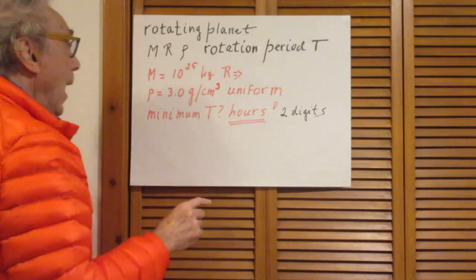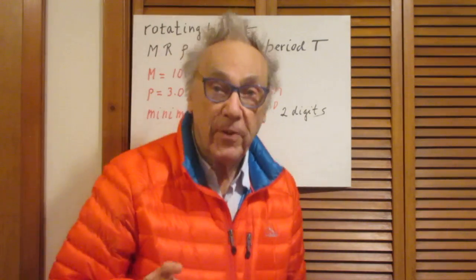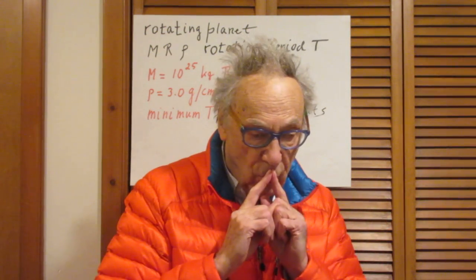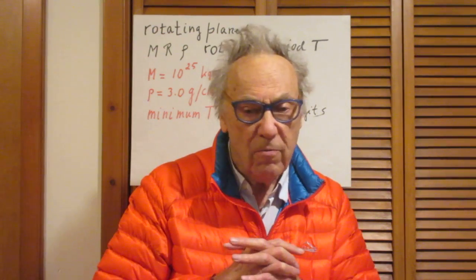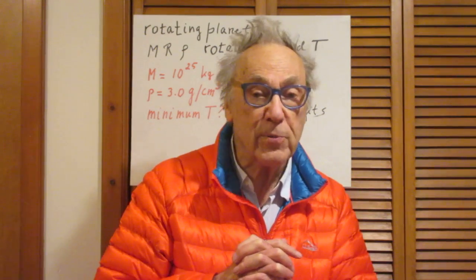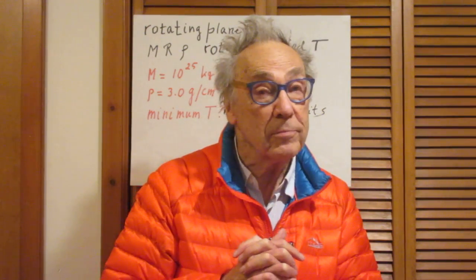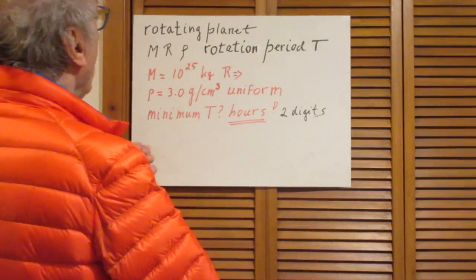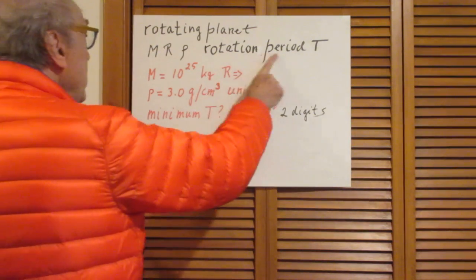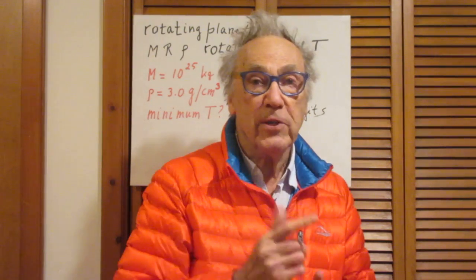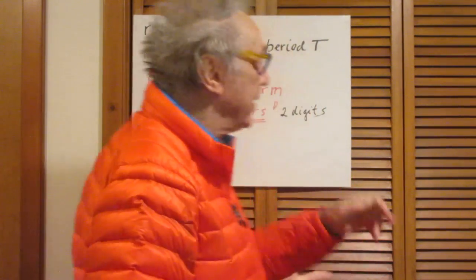And I assume that the density is constant everywhere — so a uniform density. You might think that's very artificial, well yeah, but the answers you will get for this problem are still quite reasonable. Just wait. The rotation period of the planet — the planet is rotating around its own spin axis — is capital T.